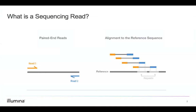Now, on to a few basics of NGS: what is a sequencing read, and how do these reads align to the reference genome in a targeted resequencing experiment? There are two sequencing read types: single-end sequencing and paired-end sequencing.